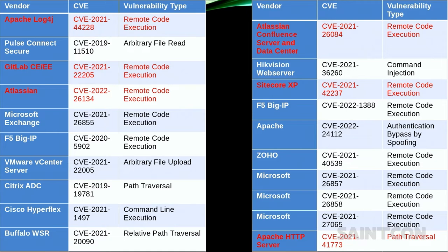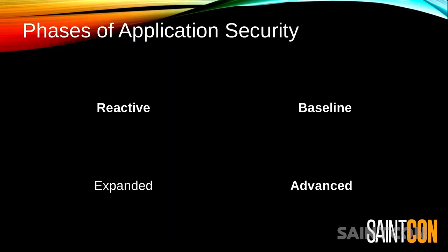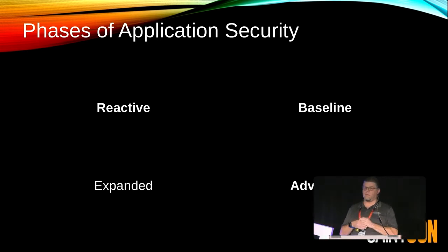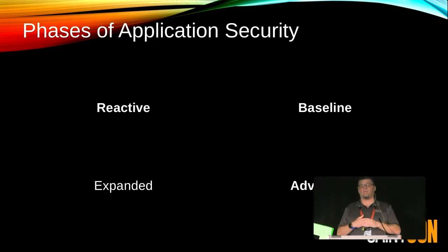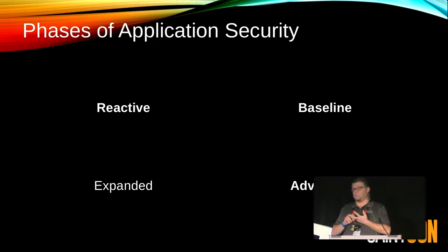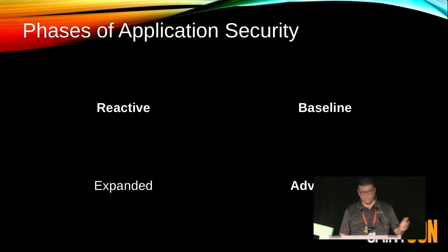We've clearly demonstrated the need for application security. Let's think about how it gets rolled out. There are basically four phases: reactive, baseline, expanded, and advanced. The reactive phase is what happens when you first decide to have an AppSec team — you start hearing about vulnerabilities and take them to the security team. Baseline is starting to get a handle, rolling out some tools, defining processes. Everything builds up to the advanced phase where you're proactively seeking vulnerabilities through pen testing, unit tests, misuse/abuse cases, internal testing, and QA writing requirements upfront.